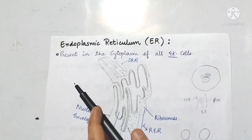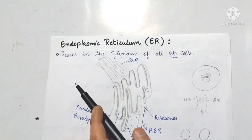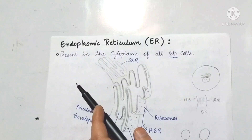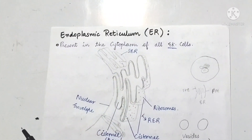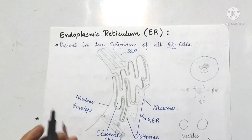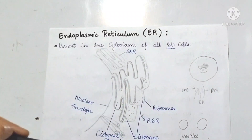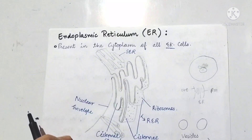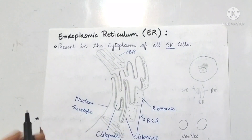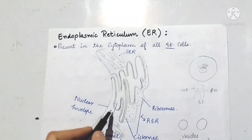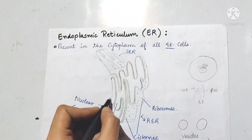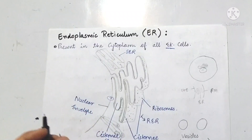Eukaryotic and prokaryotic cells have already been covered. If you haven't seen that video, please watch it. Now let's look at this labeling which we need to know. This is our nucleus — imagine that the nucleus is present. This is the nuclear envelope and this is a nuclear pore.